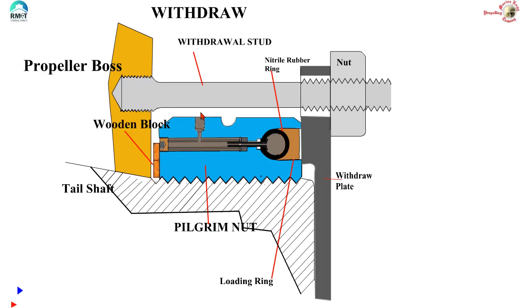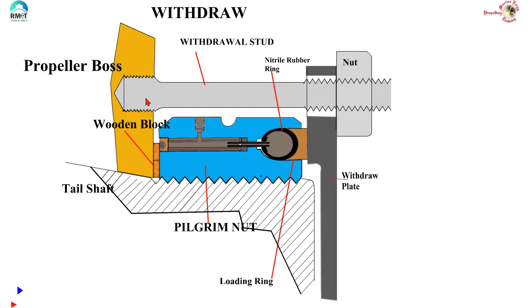Now we commence pumping in grease through this port. The pressure of the grease will make the nitrile rubber ring extend and transmit the load onto the load ring. And once the nitrile ring expands, the load ring will push the withdrawal plate which in turn will pull the withdrawal stud. Now you can see the fellow getting pushed and the propeller has got detached from the taper.